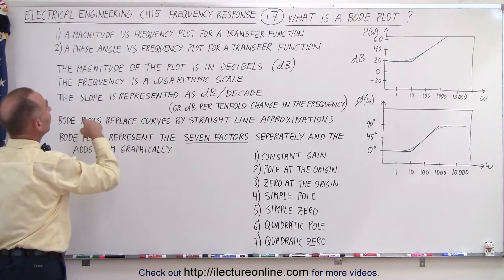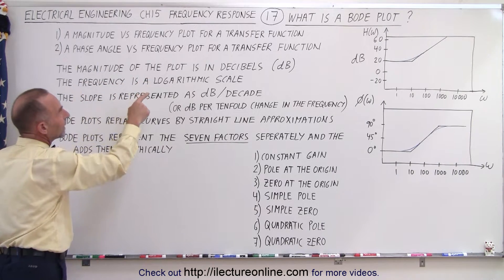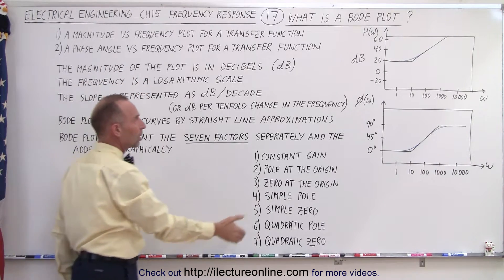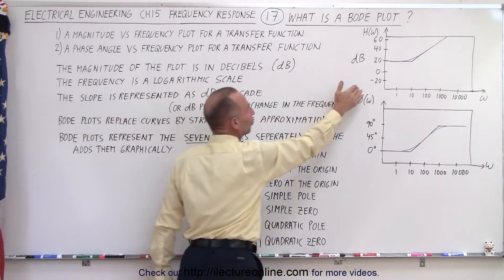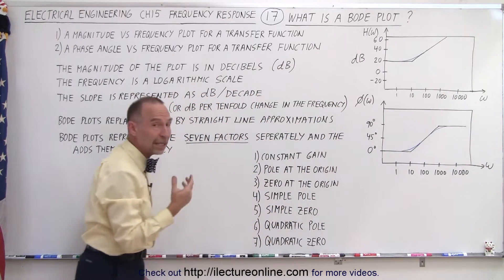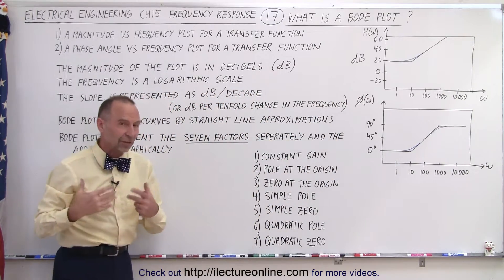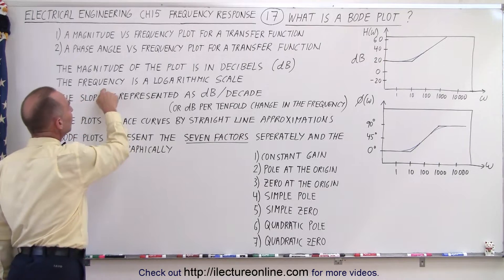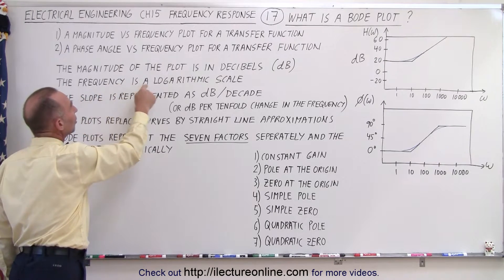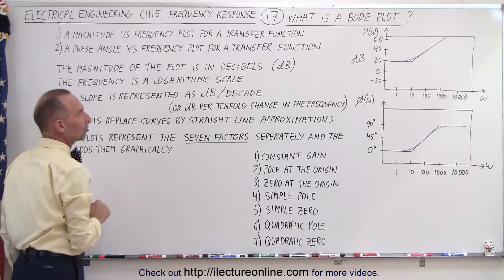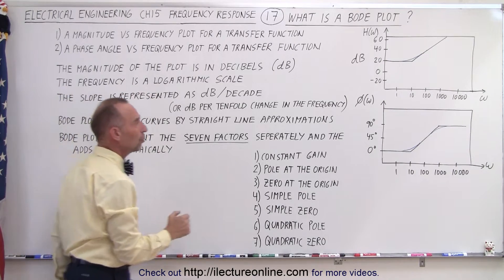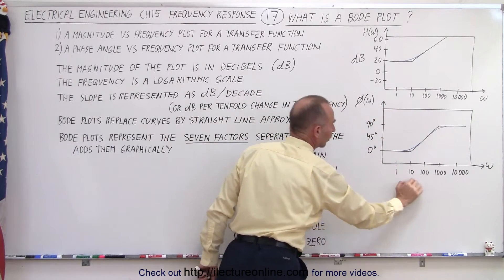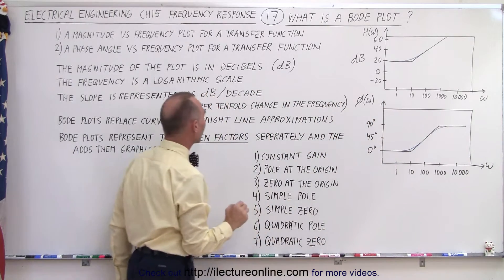Notice that the magnitude of the plot is in decibels. When we talk about the magnitude of the transfer function, we use decibels as shown in the previous video. The frequency is on a logarithmic scale — not a linear scale — on the horizontal axis.